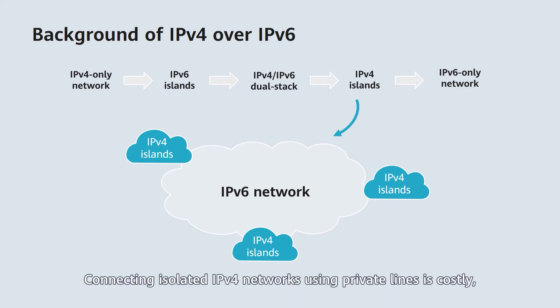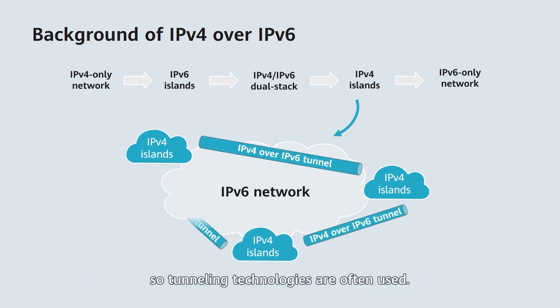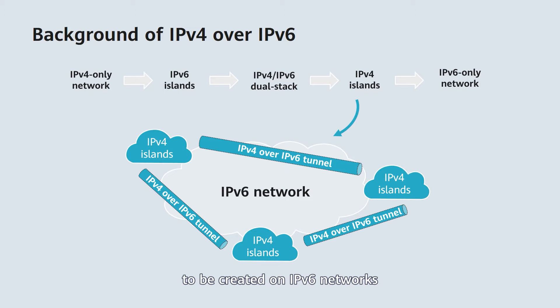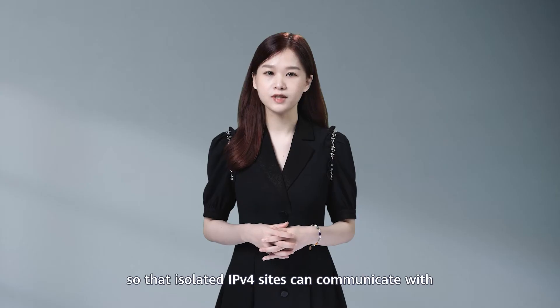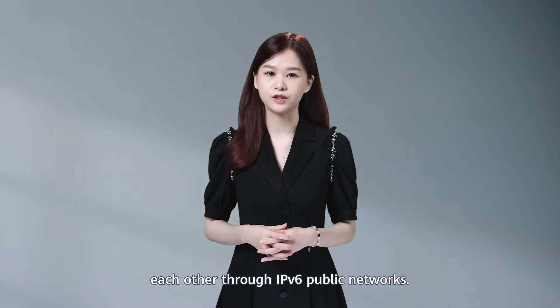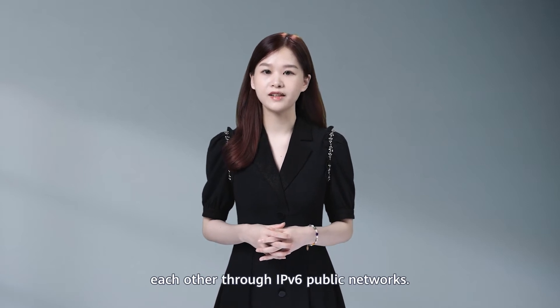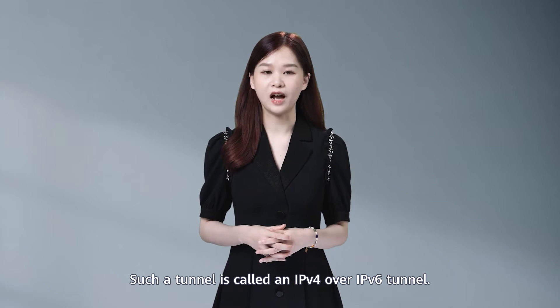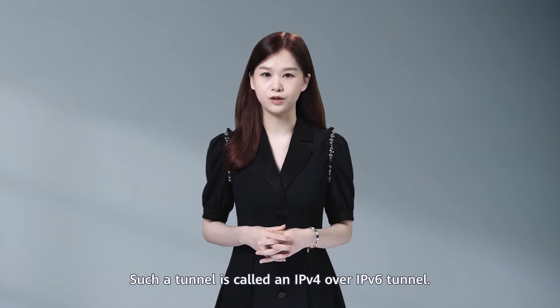Connecting isolated IPv4 networks using private lines is costly, so tunneling technologies are often used. These technologies allow tunnels to be created on IPv6 networks, so that isolated IPv4 sites can communicate with each other through IPv6 public networks. Such a tunnel is called an IPv4 over IPv6 tunnel.